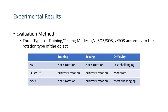To verify the rotation invariance ability, we conduct experiments in three training-testing modes: ZZ, SO3/SO3, and Z/SO3. Here, Z means Z-axis rotation, while SO3 means arbitrary rotation. ZZ mode is less challenging, while the Z/SO3 mode is the most challenging scenario.